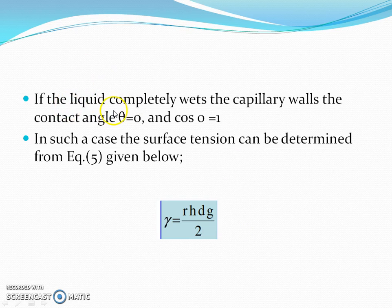If the liquid completely wets the capillary walls, the contact angle θ equals 0 and cos0 equals 1. In such case, the surface tension can be determined by equation 5 given below: γ equals rρhg divided by 2.